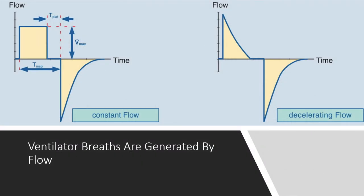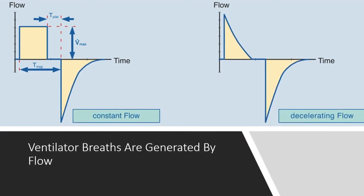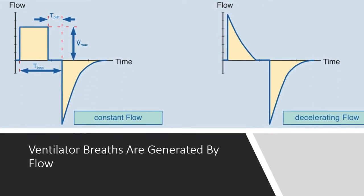We should really be talking about flow, because it's flow that actually generates these breaths. Here we have two waveforms of different style ventilator breaths — these are scalars, which you find on the ventilator and are very useful to keep your eye on. This is a flow scalar, showing flow on the y-axis versus time. On the left we have a volume-style breath, and on the right a pressure-style breath.